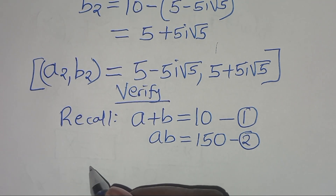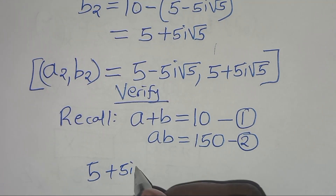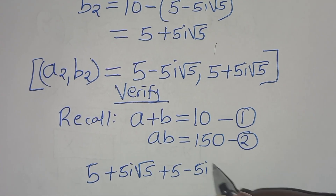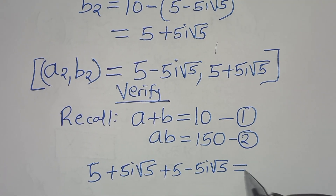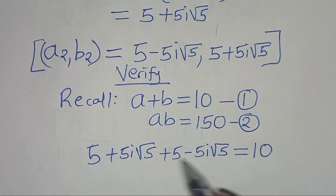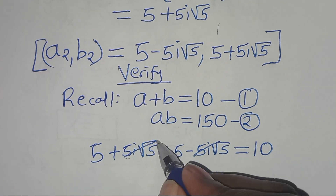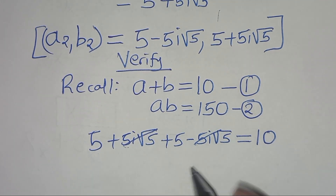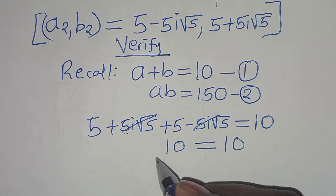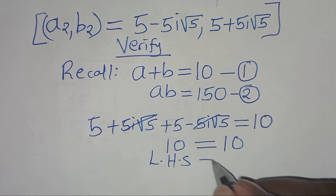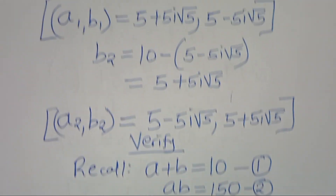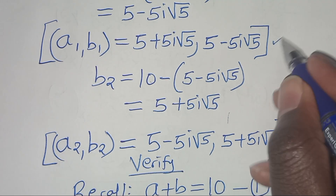We have (5 plus 5i√5) plus (5 minus 5i√5), which should equal 10. The terms 5i√5 and minus 5i√5 cancel, leaving 5 plus 5 which equals 10. The left-hand side equals the right-hand side, so the first solution set A1, B1 satisfies the equation.